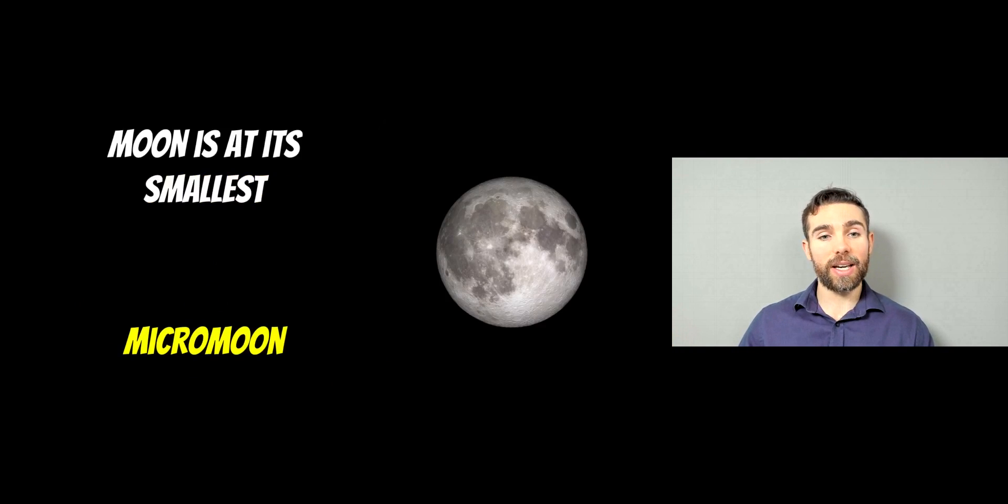So here it would be known as a micromoon. So the opposite of a supermoon is a micromoon. That is when it appears the smallest in the sky.